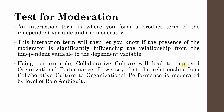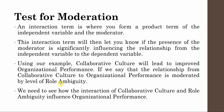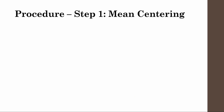Using our example: collaborative culture will lead to improved organizational performance. The relationship from collaborative culture to organizational performance is moderated by level of role ambiguity. In this session, the relationship between collaborative culture and organizational performance will be moderated by role ambiguity. In simple terms, role ambiguity will weaken the strength of the relationship between collaborative culture and organizational performance. We will need to see how the interaction of collaborative culture and role ambiguity influences organizational performance.